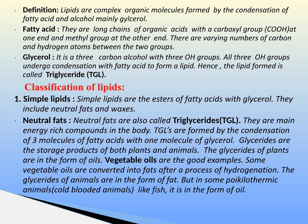The classification of lipids: the first type is simple lipids. Simple lipids are esters of fatty acids with glycerol and include neutral fats and waxes. Neutral fats, also called triglycerides, are the main energy-rich sources of the body. Triglycerides are formed by the condensation of three molecules of fatty acids with one molecule of glycerol. Glycerides are storage products in both plants and animals. In plants they occur as oils — vegetable oils are good examples — and some are converted into fats by hydrogenation. In animals glycerides occur as fat, though in some poikilothermic animals like fish it is in the form of oil.